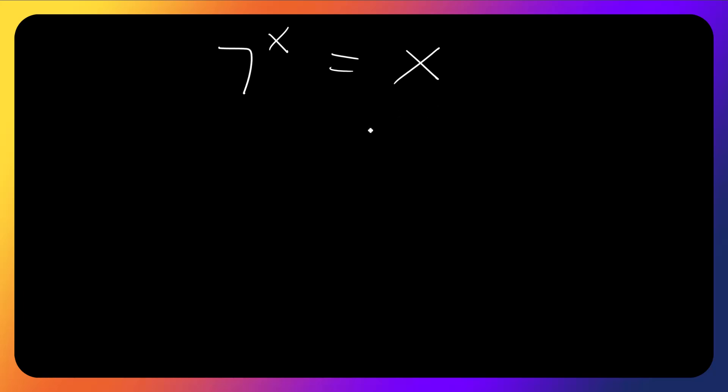How do we solve for x here, given 7 to the power x equals x?